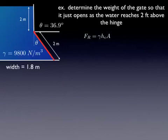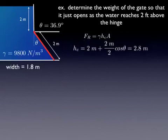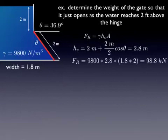Let's calculate the magnitude of the force, gamma HCA. HC is the distance from the centroid of the object to the water surface. We have to use some trigonometry to do this. It's two meters to get down from the water surface to the hinge, and then we have to get halfway down that planar surface using cosine theta to get that vertical component. That works out to be 2.8 meters. We can now solve for the resultant force, which is 98,000 newtons.